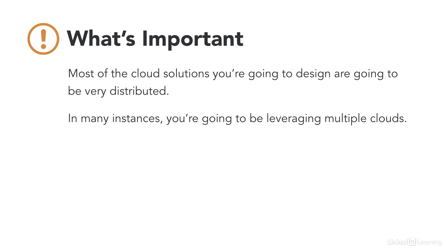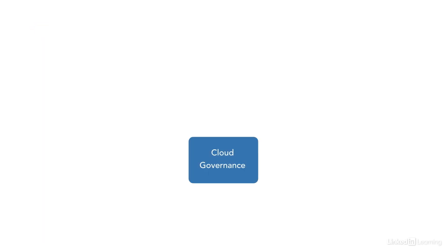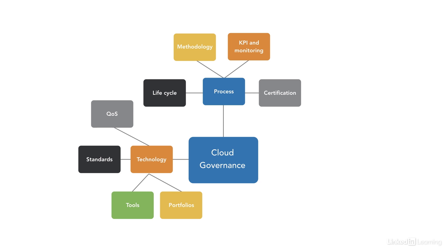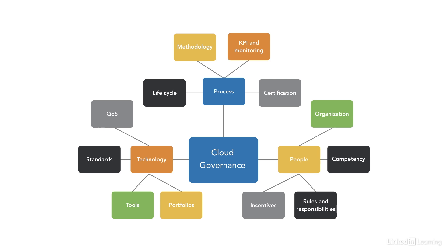That's mixed and matched with different public cloud providers such as AWS, Microsoft, Google, and perhaps Alibaba. Cloud governance is really the center of the universe for distributed systems. Part of being an architect is coming up with advanced solutions that remove human beings from having to deal with the minutiae of the architecture. The more details we have to deal with, the more we need governance or abstraction services sitting between us and the complexity. We have methodologies, KPIs, monitoring, lifecycle, processes, certifications, technology, quality of service standards, tools, portfolios, people, organization, competency, incentives, rules, and responsibilities to keep in mind.